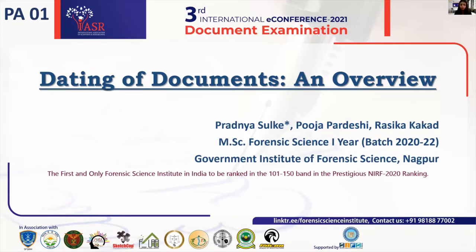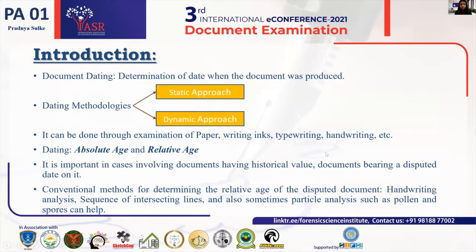Dating of document, in simple terms, means determining the date of a document — when the document was formed or produced. Document dating techniques are based on two methodologies: the static approach and the dynamic approach. When we talk about dating of documents, there are two terminologies one should be well acquainted with: the first is the absolute age and the second is the relative age. Absolute age is the actual age of the document itself, whereas the relative age is the age of a document relative to some other document.